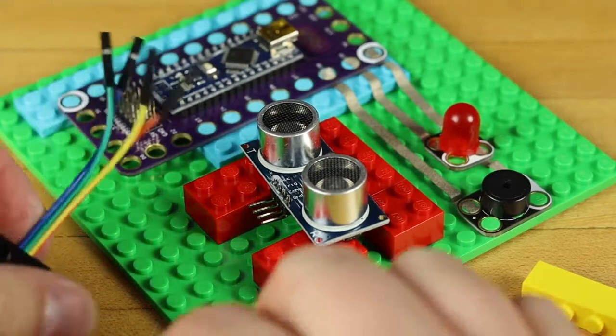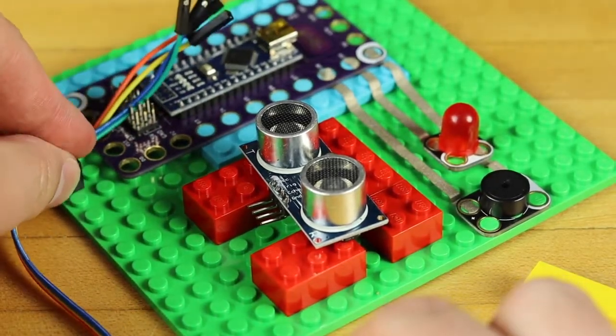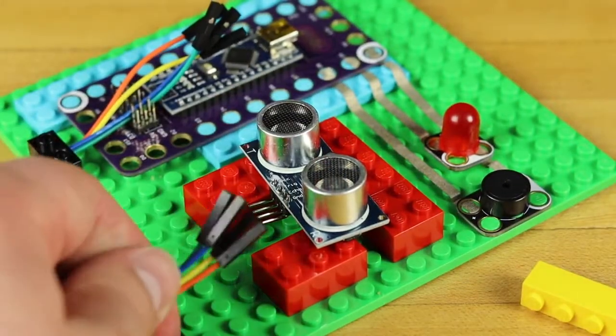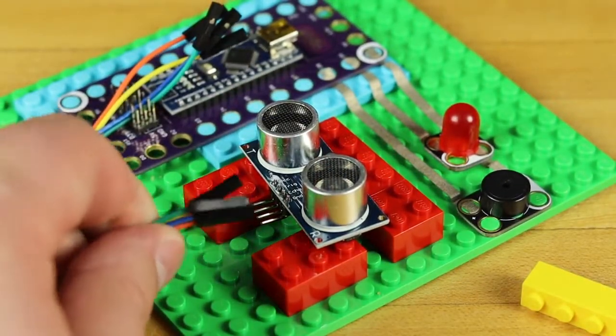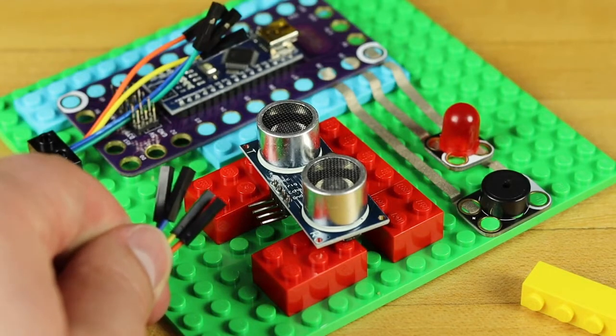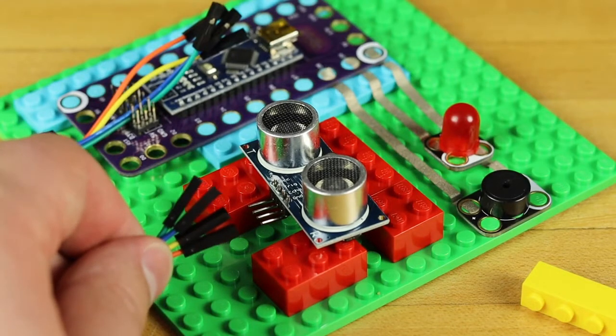Connect your ultrasonic rangefinder to your CrazyCircuits robotics board with a ribbon cable. Connect the trigger pin on your rangefinder to D6 on the board and the echo pin to D5. VCC and ground can connect to the ground and 5V on the robotics board.